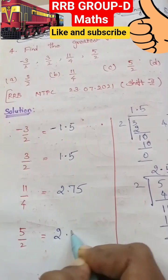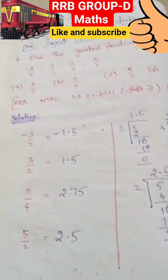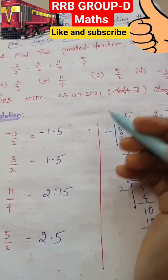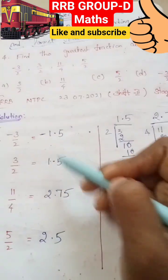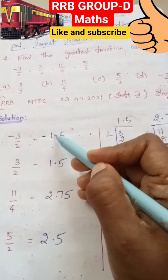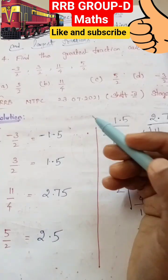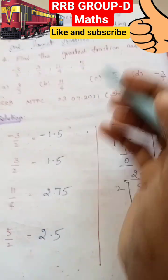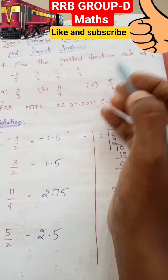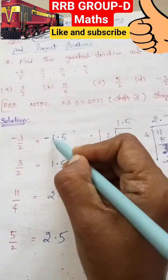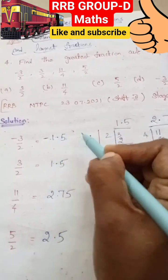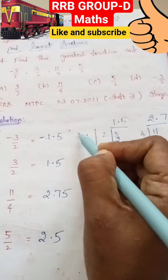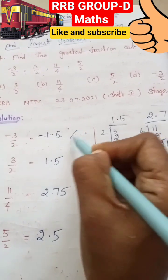So 2.5. Now find out the values. Here we can find out. The negative number is the greatest fraction — so negative number, we skip it. This is the greatest fraction, so negative number is skipped.